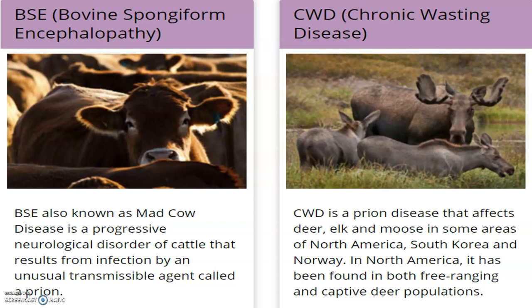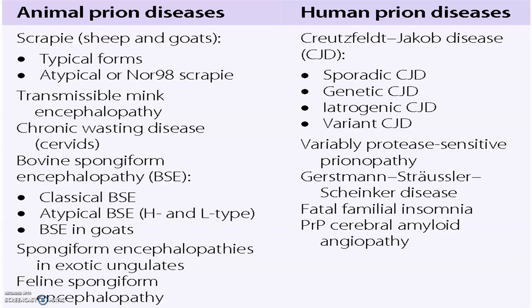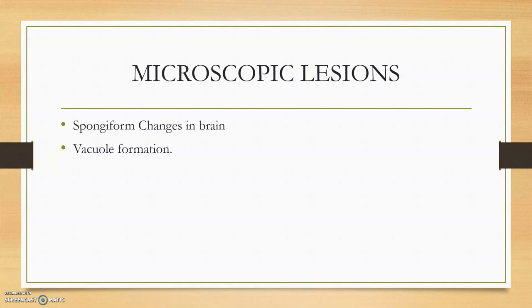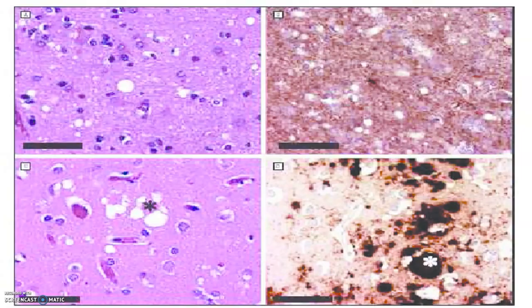CWD is prevalent in deer, elk, and moose in North America and South Korea. BSE is found in America and the United Kingdom. The key microscopic lesions in prion disease are vacuole formation and spongiform changes in the brain. One can easily identify vacuolar formation and destruction of brain tissue, including macrophage involvement, under microscopy.